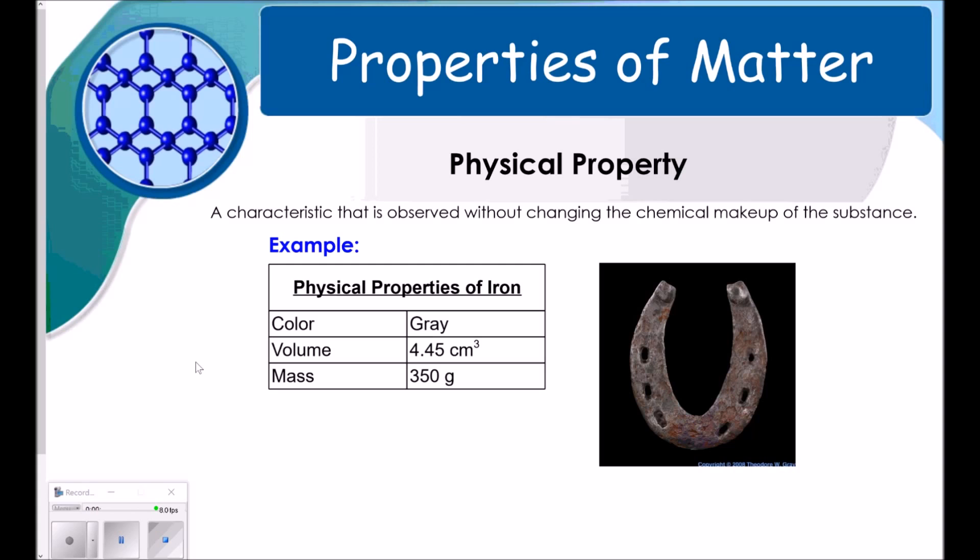A physical property is a characteristic that is observed without changing the chemical makeup of the substance. So, for example, I have some physical properties of iron. The color is gray, the volume could be 4.45 cubic centimeters, and a mass of 350 grams. These are all physical properties.